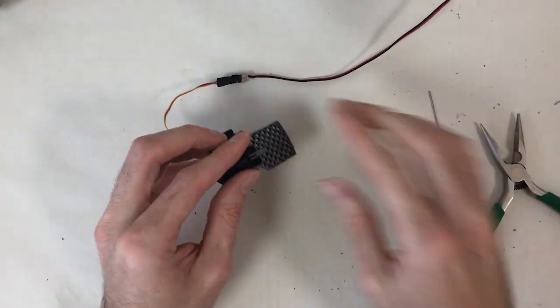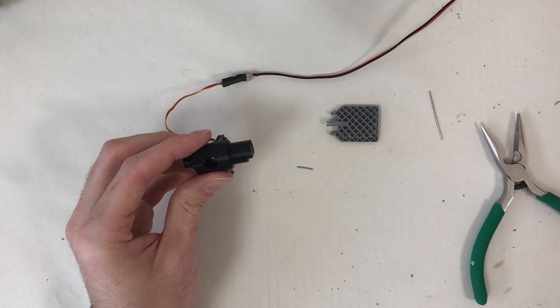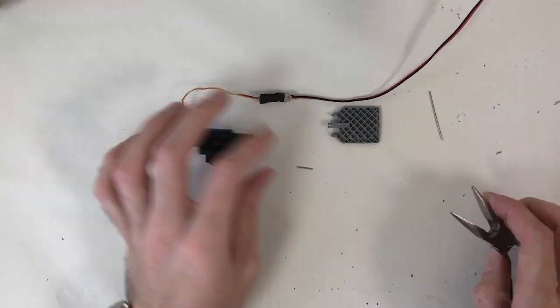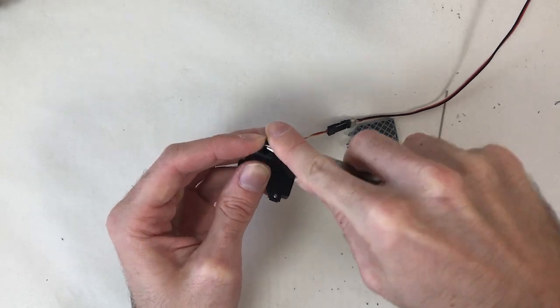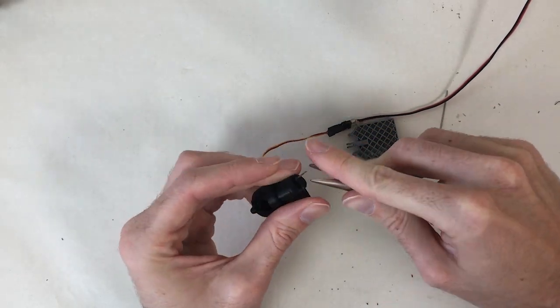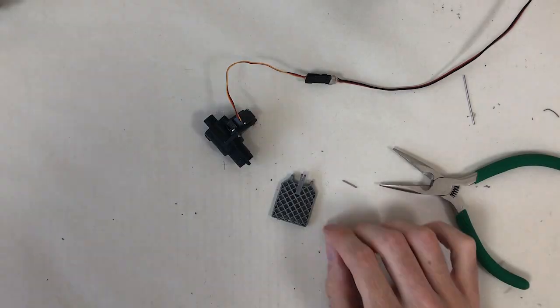Next, we connect the fin to the servo motor linkage. First, I remove the fin from the hub. Then, I adjust the size of the holes in the linkage and the fin where the pin must fit. Here again, we want as little friction as possible in the hinge, but we still need at least one tight fit to prevent the pin from coming loose.